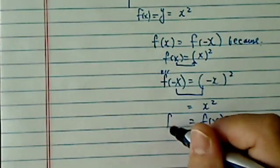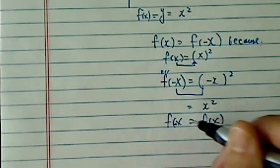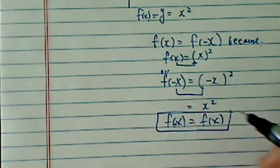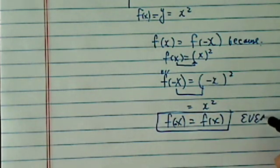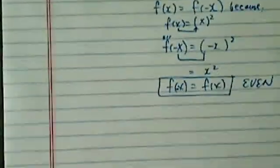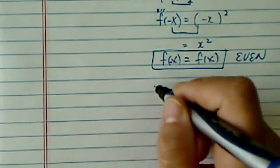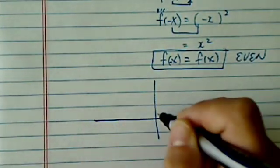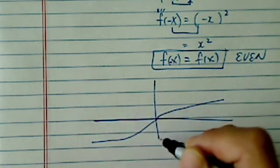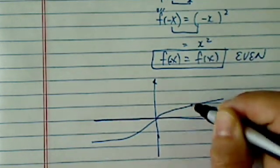So, therefore, we proved that for this particular function, f of negative x equal to f of x. Thus, we call it an even function. It's an even-tempered function. By contrast, let's take a look at the odd function. Here's my odd function.